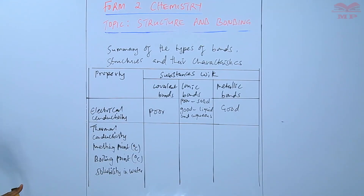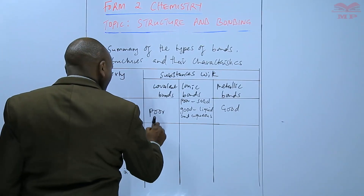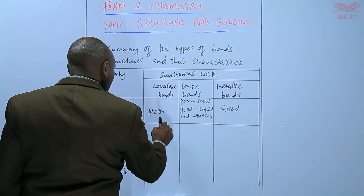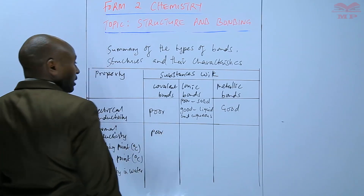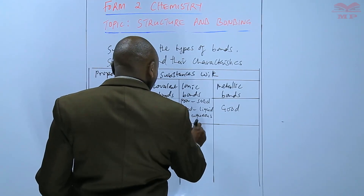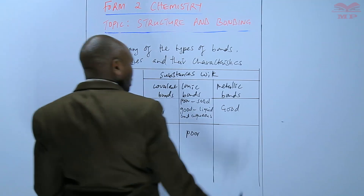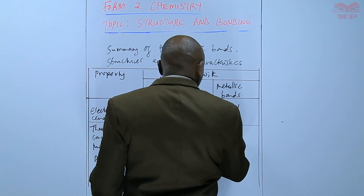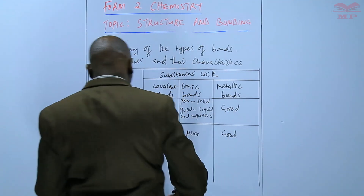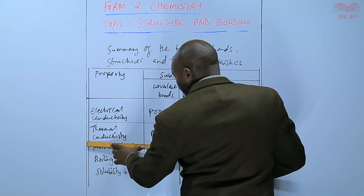Looking at thermal conductivity, covalent substances are poor conductors of heat, ionic bonds are also poor, but metals are good in terms of thermal conductivity.